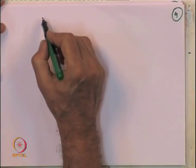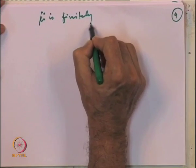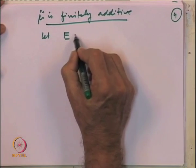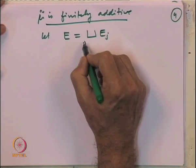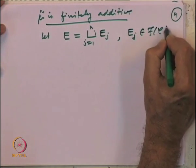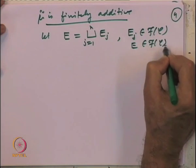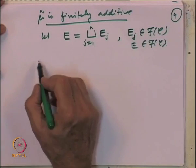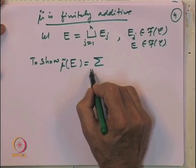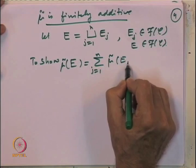Now let us look at the next property: μ̃, defined on the algebra generated by the semi-algebra, is finitely additive. To prove this, let E = ∪_{j=1}^{n} E_j (disjoint), where each E_j and E belong to the algebra generated by C. We want to show μ̃(E) = Σ_{j=1}^{n} μ̃(E_j).